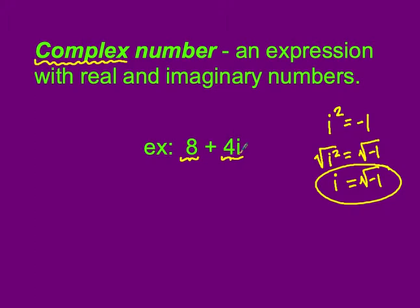Any number in our number system can be made into a complex number. If I'm just talking about the number 5, we can write it as a complex number by writing it as 5 plus 0i. It now looks like the complex form with the real number first and the imaginary part second.